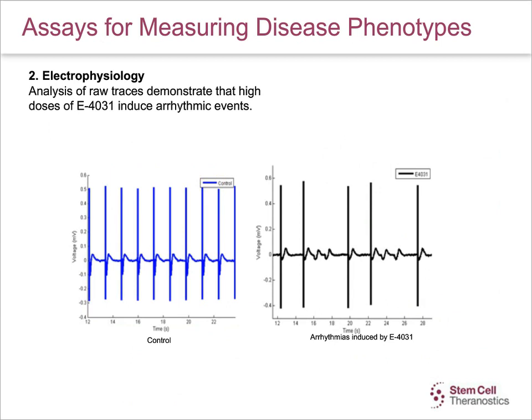This slide shows analysis of raw traces, demonstrating that high doses of a compound E4031, which is a heart-type potassium channel blocker, can induce arrhythmic events as compared to those in controlled cardiomyocytes.